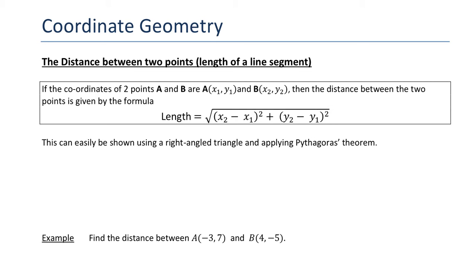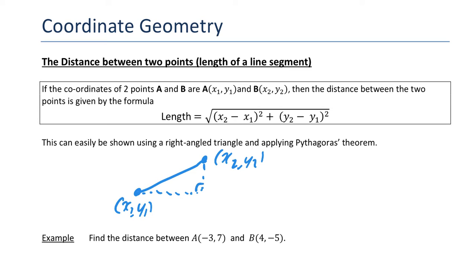Where this comes from is just Pythagoras' theorem. So if you imagine you've got a point at (x₁, y₁) and a point over here at (x₂, y₂), there's a length between them. If I link those up with the horizontal, that's my length L, and the vertical change is y₂ minus y₁, and the horizontal change is x₂ minus x₁.